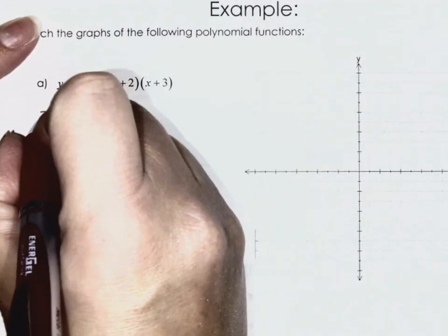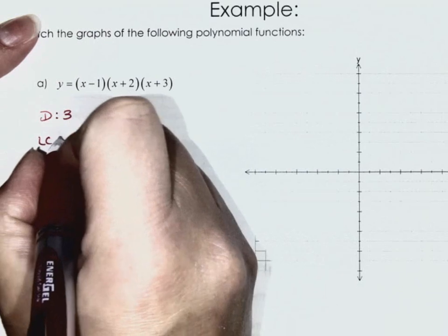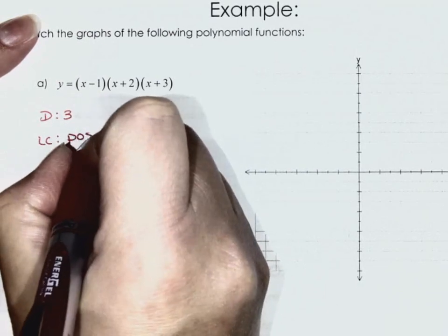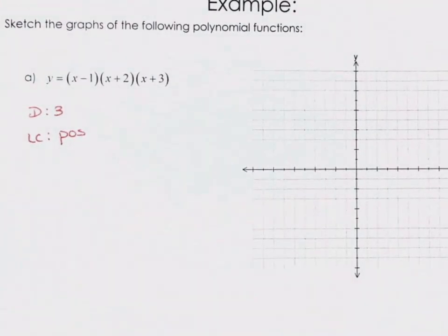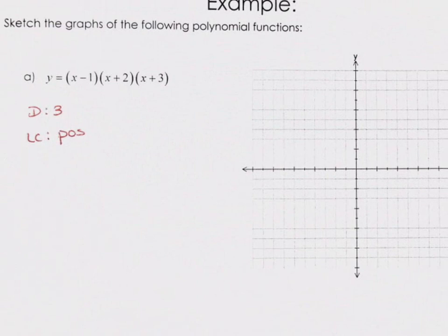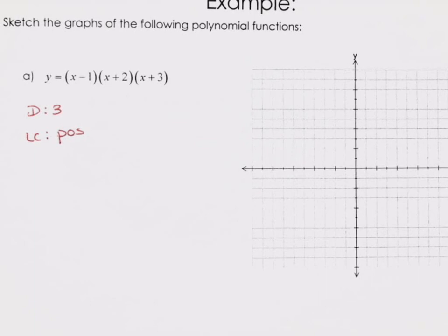This is a degree of three with a positive leading coefficient. What does that tell me about my end behaviors? Quadrant one and three — we're doing one of these, so that's what we should anticipate.